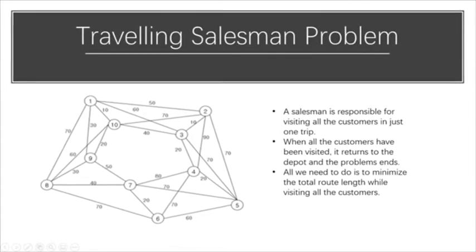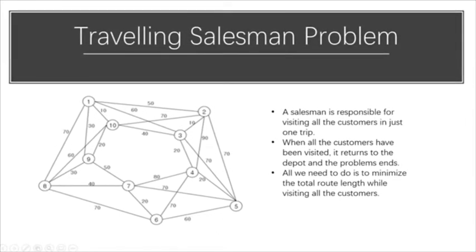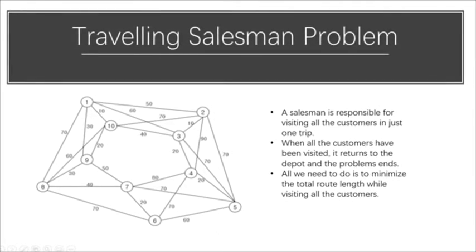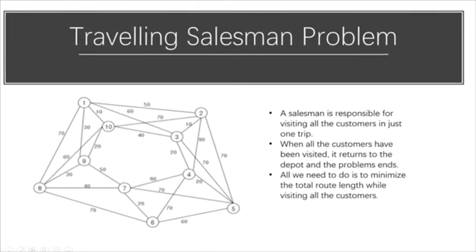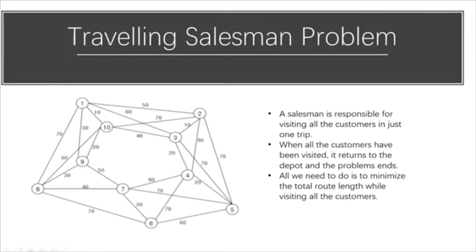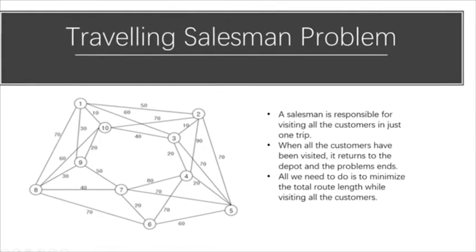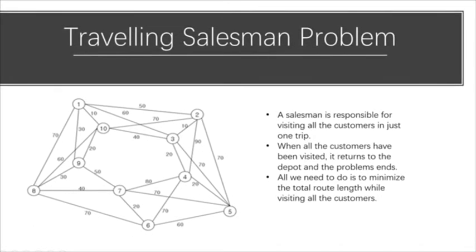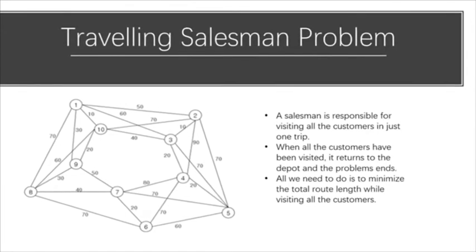In general, the traveling salesman problem is hard to solve. If there is a way to break this problem into smaller component problems, the components will be at least as complex as the original one. This is what computer scientists call NP-hard problems.